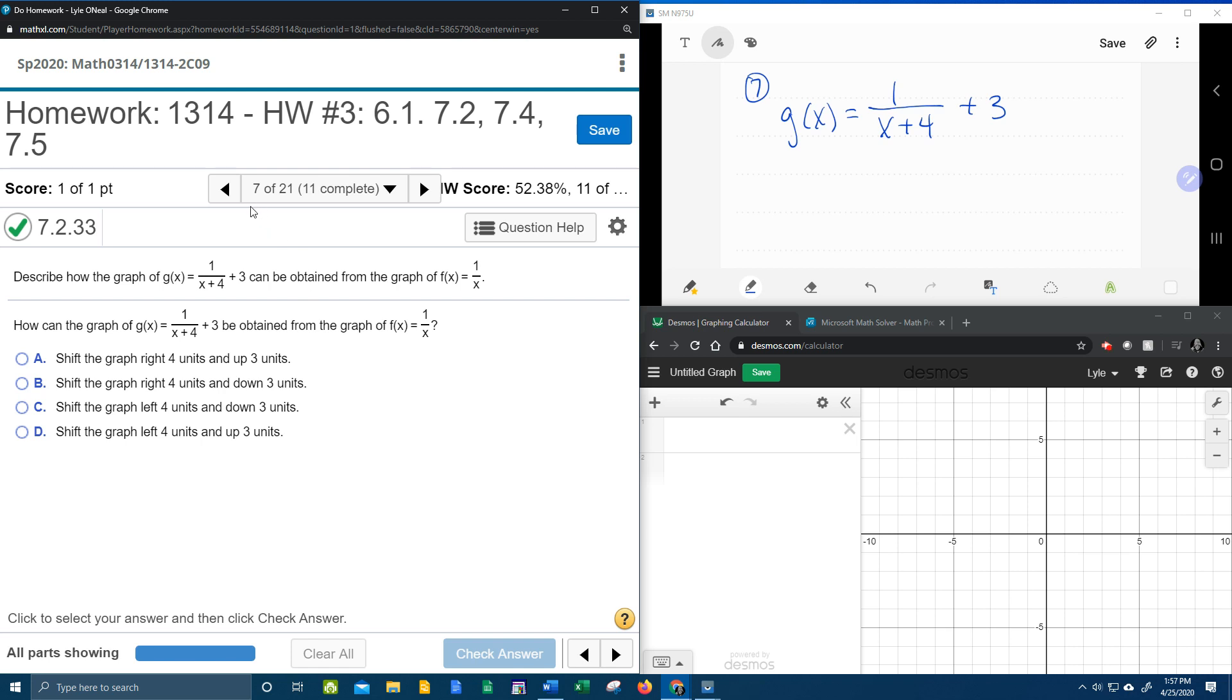All right here we go, question number 7 from our college algebra homework number 3 in My Lab Math says to describe how the graph of g of x, being this function, can be obtained from the graph of f of x equals 1 over x.